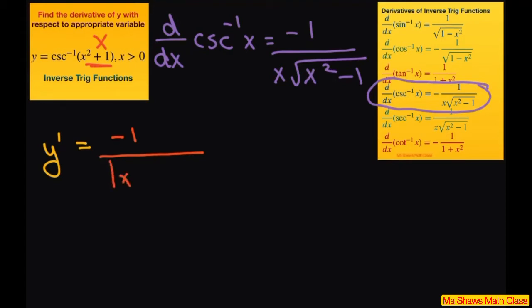So do absolute value x squared plus 1 and then you take the square root of your x which is x squared plus 1 and then we have to square it minus 1. Then you also have to differentiate with respect to x your x squared plus 1.